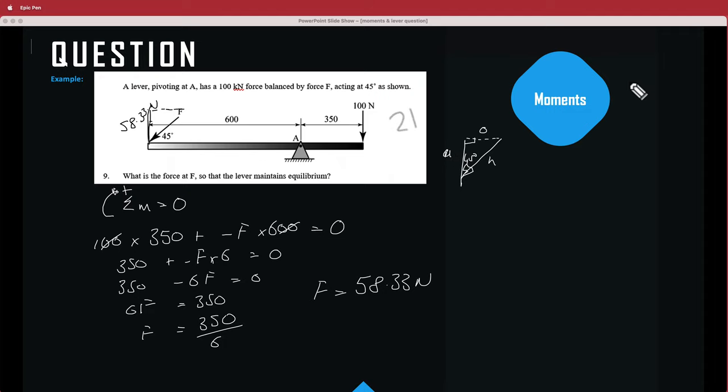So by using trig now we can set up our SOH CAH TOA. So basically what we are going to be using is this one here, we are going to be using cos and this is going to be the adjacent over the hypotenuse. So we know that the angle in there is 45 degrees, so we are going to say cos 45 degrees is equal to 58.33 newtons over H.